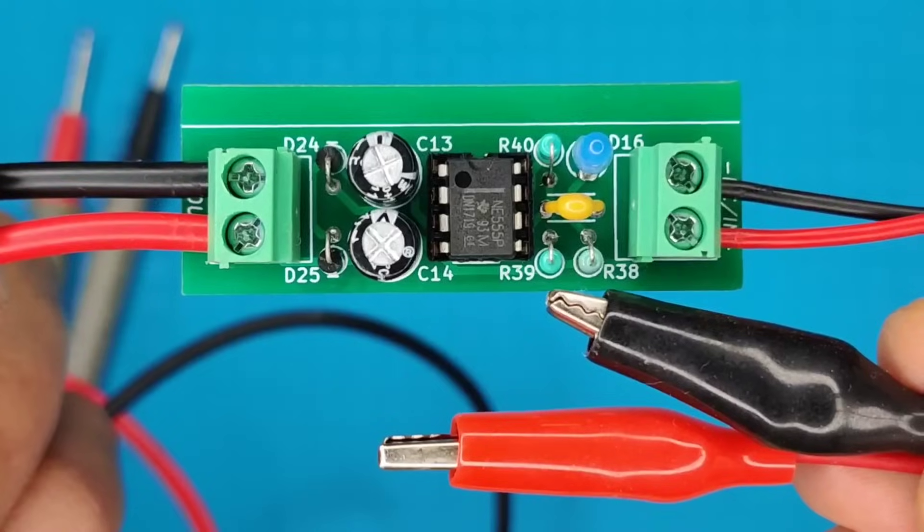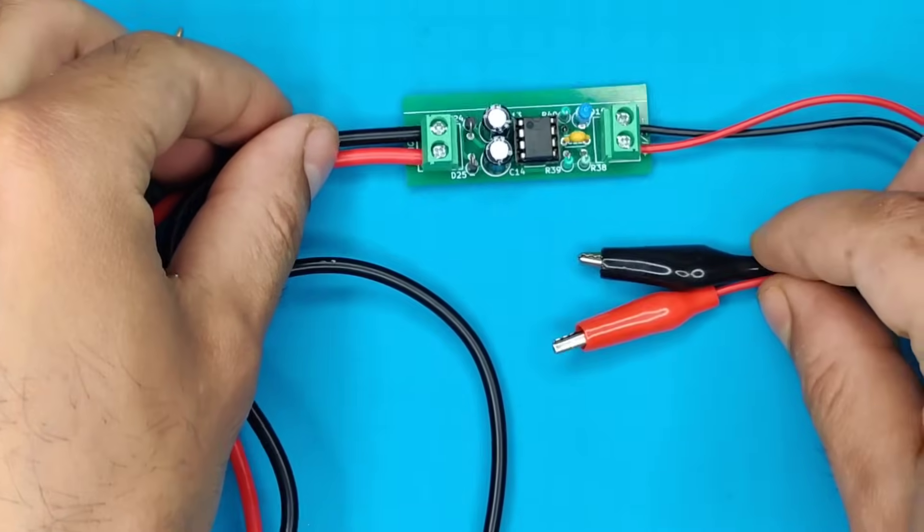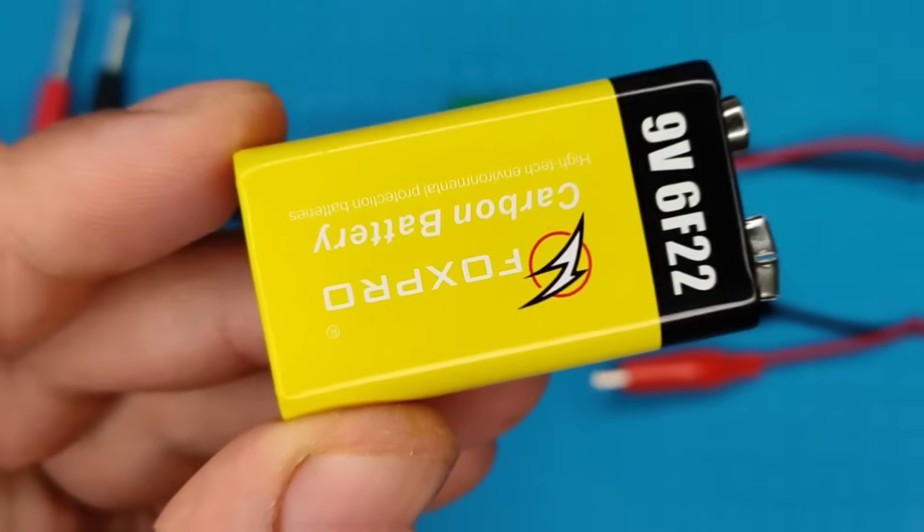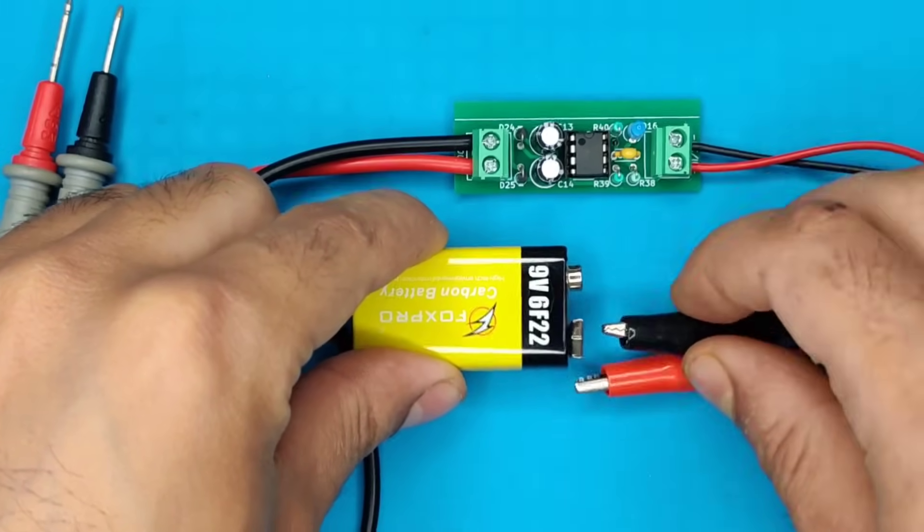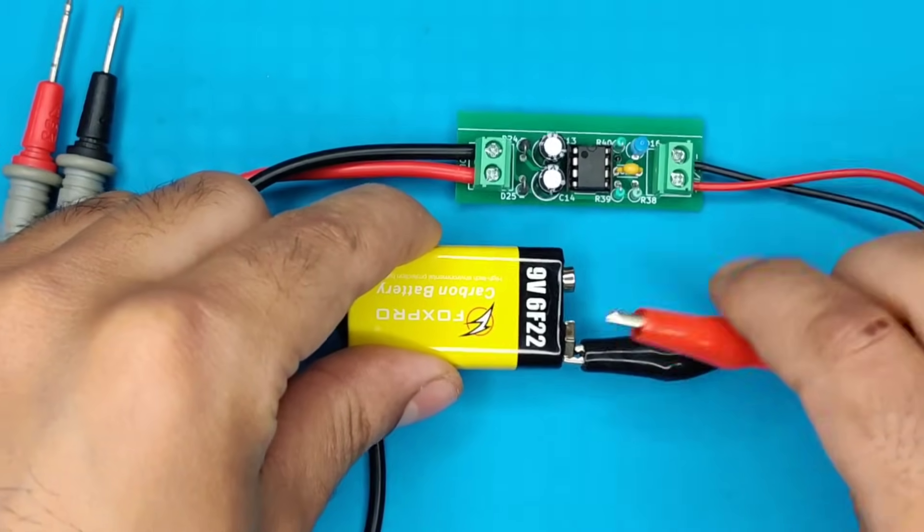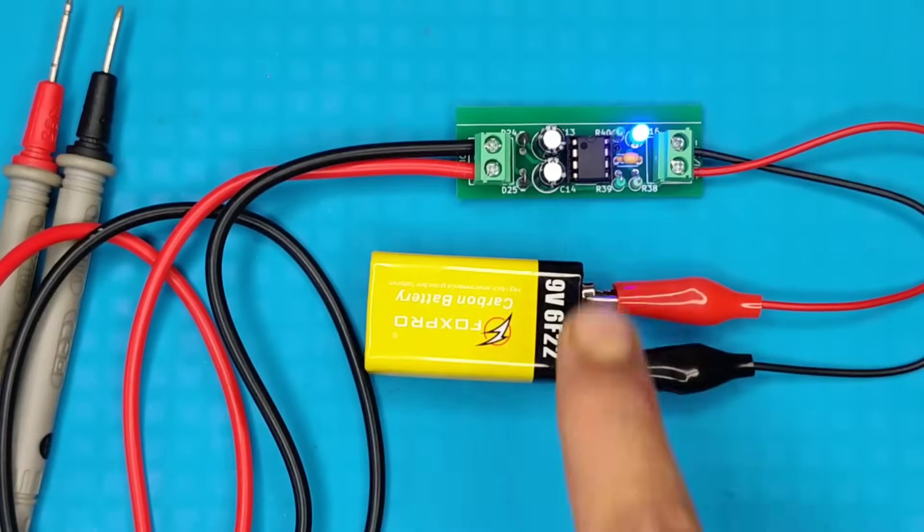And here our circuit is ready for testing. Use a 9 volt battery, and connect with input of the circuit. And this is powered on.